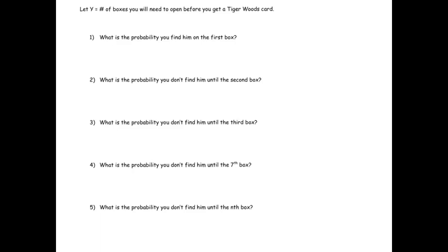So let's let Y be the number of boxes you'll need to open before you get a Tiger Woods card. So what's the probability you find them on the first box? And I'm going to use notation as I write this. Well that's the probability that you get them on the first box, and Y is the number of boxes you need to open before you get them, so that's just Y equals 1. The probability that Y equals 1. Well, that's easy. You open up the first box and either you get them or you don't, and there's a 20% chance of getting them.